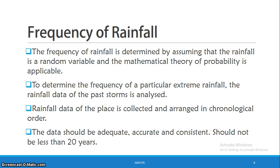Now, if it is frequent, it will be extreme rainfall. We will assume this rainfall as a random variable. Then, probability theory is applied. We will discuss a lot of data in terms of the probability theory applied.